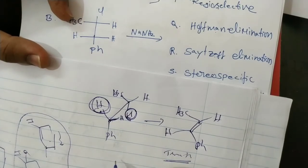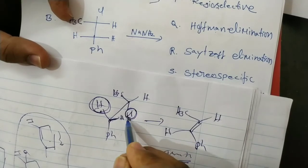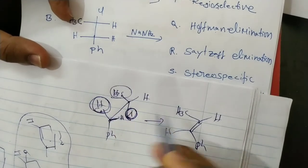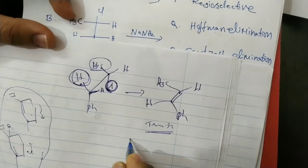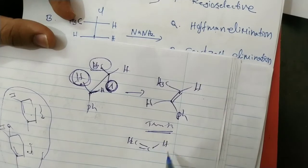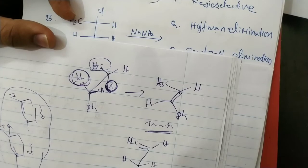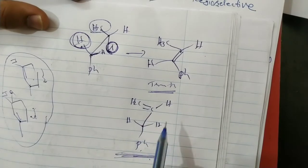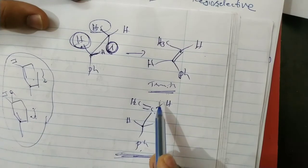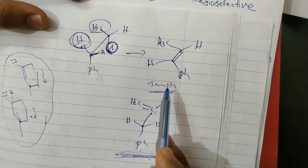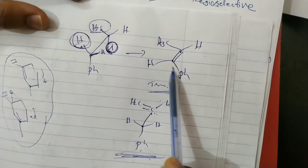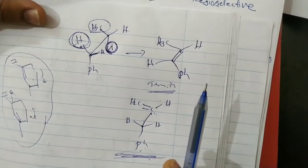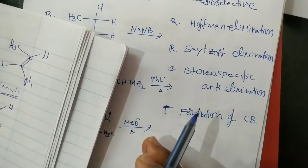Another possibility: from the beta carbon, another hydrogen can be removed along with chlorine, giving a CH2 double bond product with phenyl. So between two structurally different alkenes, one structural isomer is major — the one with conjugation and more substitution, which is more stable. So this reaction is a stereoselective reaction.